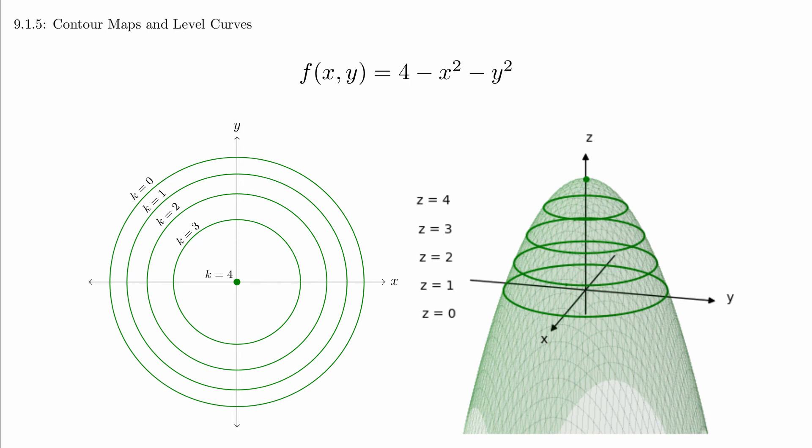We can actually understand some of the features of the surface without having to think in three dimensions. Notice that in this collection of level curves, the curves get closer together as the value of k gets smaller. The closeness of these curves is related to the steepness of the surface.